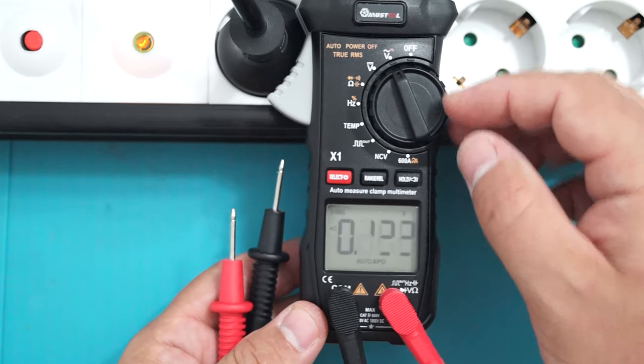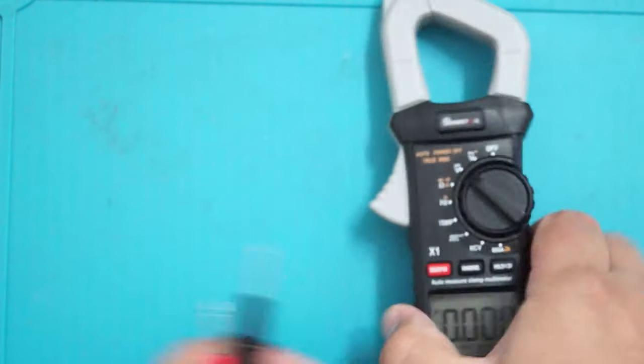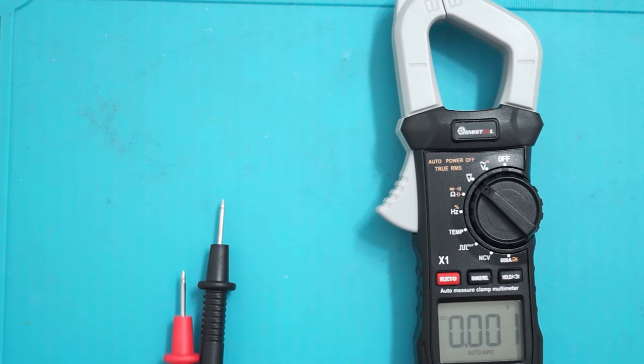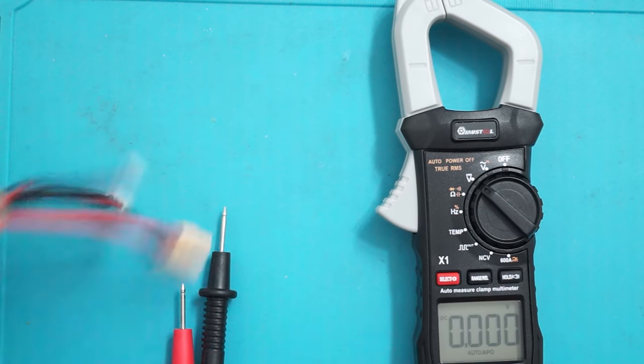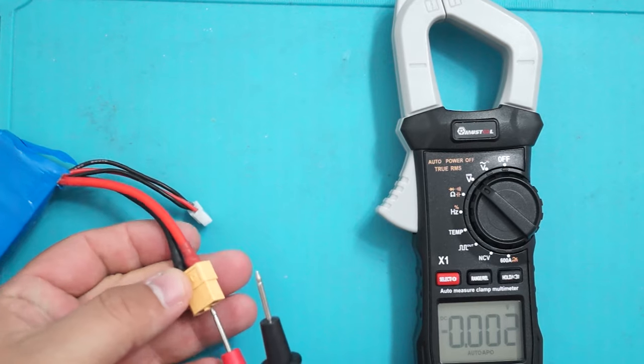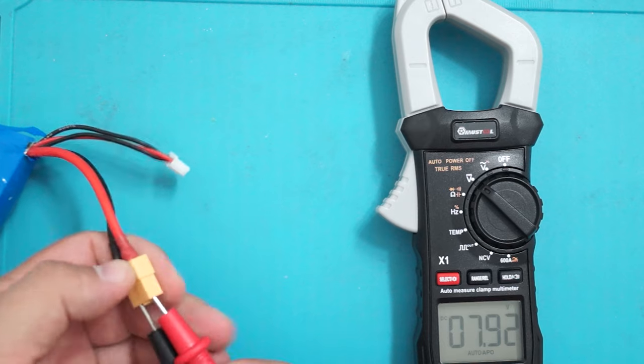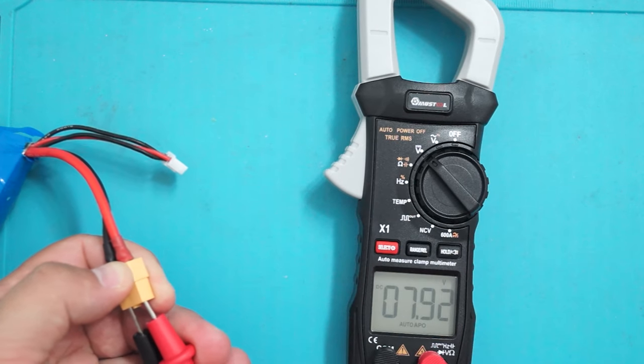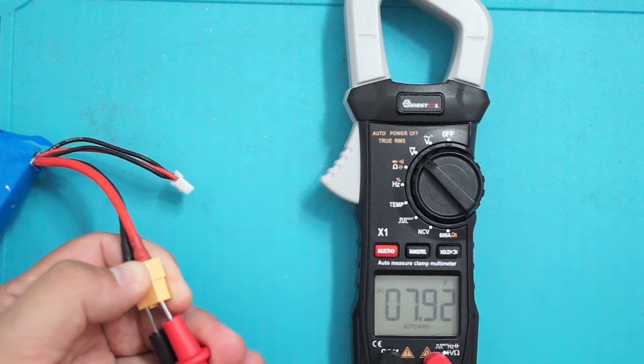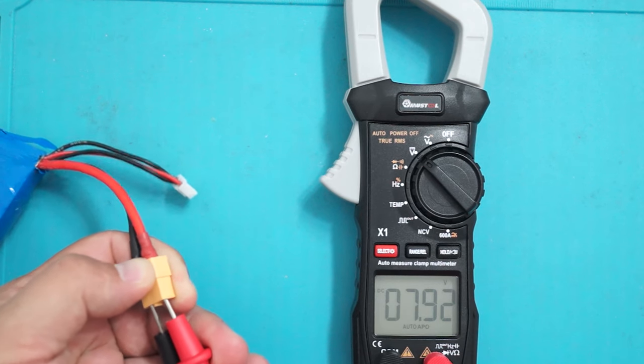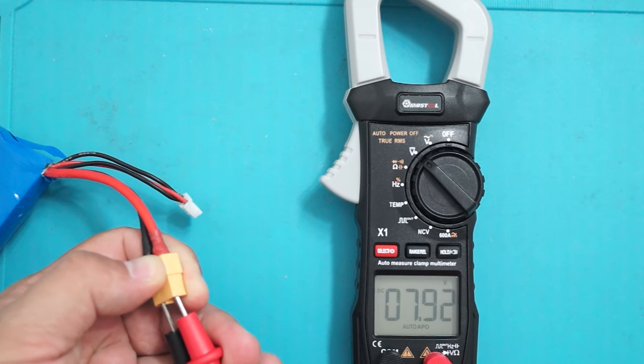Now let's switch to direct current. Let's measure this battery: 7 volts 92, that's okay. Again, auto scale.